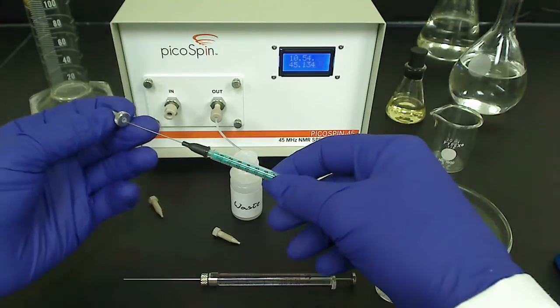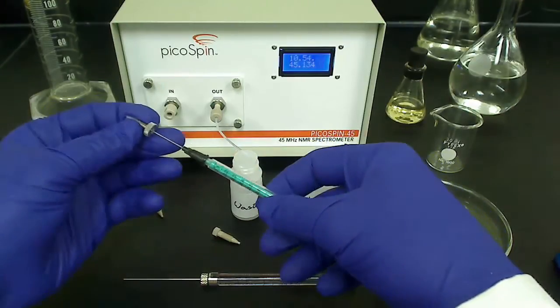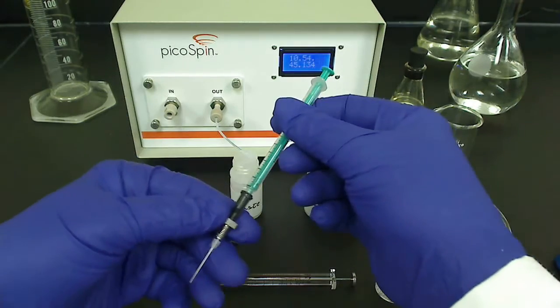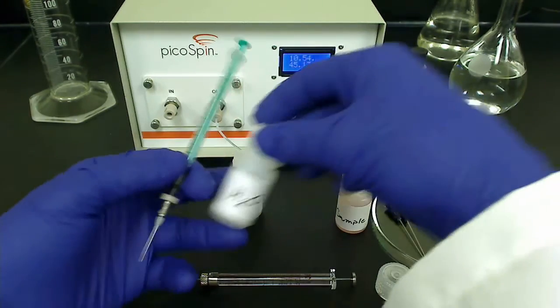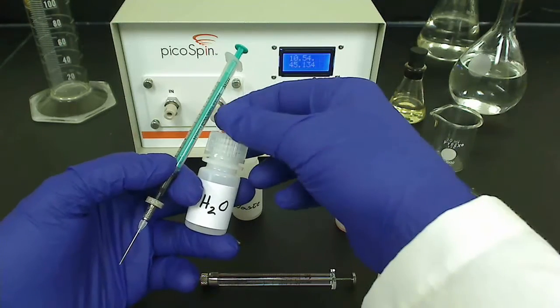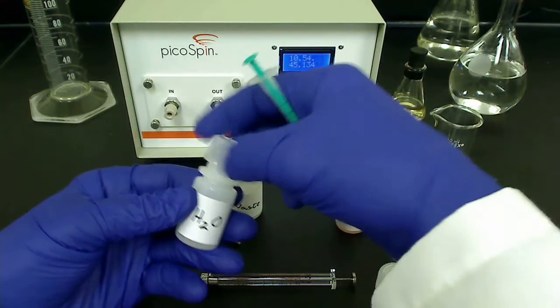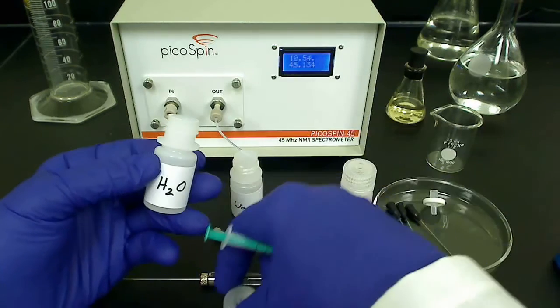Now, let's draw up some sample. I'm going to withdraw approximately 0.2 milliliters. The relatively large dead volume of the disposable syringe needle configuration results in air bubble formation behind the liquid. We'll need to take care to avoid injecting the air bubble into the cartridge. If this happens, just flush more sample through the cartridge.